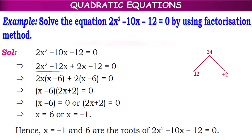Now in these two terms, 2x is common. In x² term, x went out so 1x remains; 2 already went out and in 12, if 2 went out, 6 remains. So from the first two terms, if 2x is taken common, (x − 6) remains. From the last two terms, if 2 is taken common, (x − 6) remains. Again, taking (x − 6) as common factor, 2x will remain from the first group and +2 will remain from the second group.